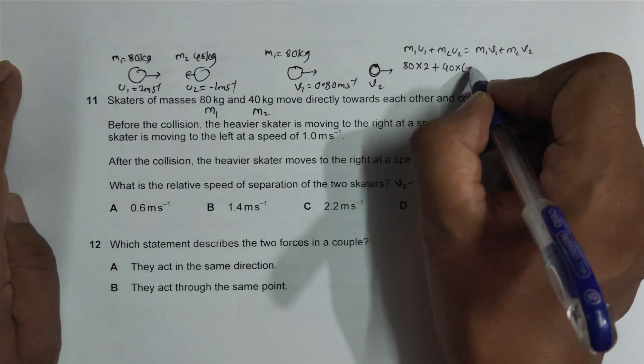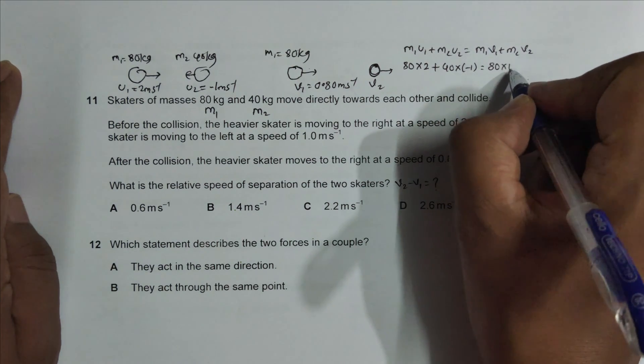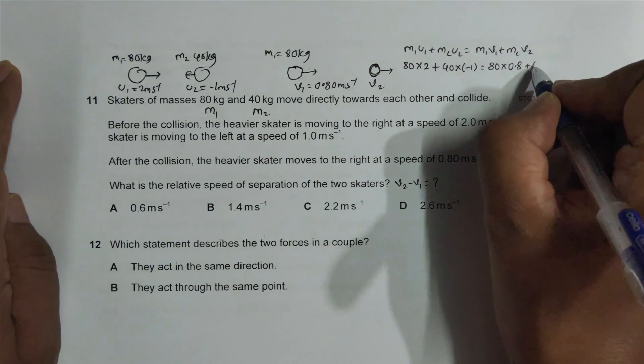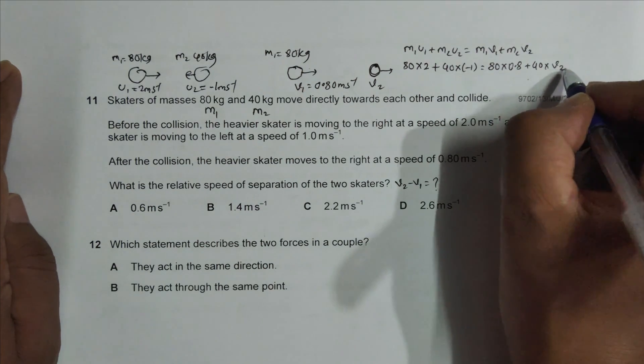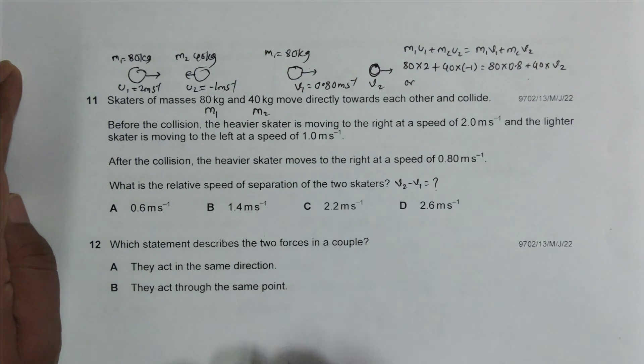into minus 1 is equal to 80 into 0.8 plus 40 into v2. So if I solve this equation, it will have 80 into 2 plus minus 40 into 1 equal to 80 into 0.8 equal to by 40.